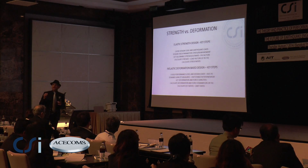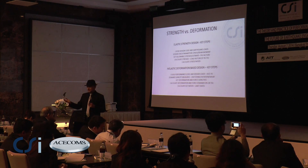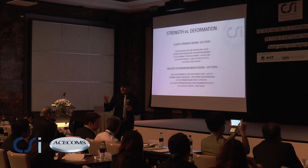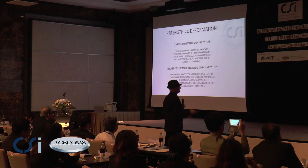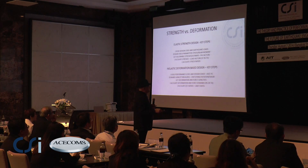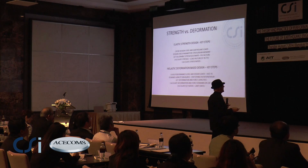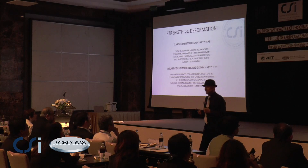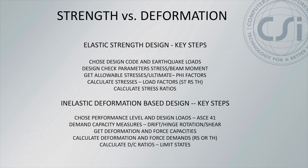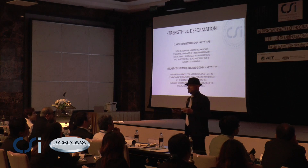For instance, if we are interested in doing a stress check of a steel structure by the codes that we currently use, we choose the design code and the earthquake loads. We then decide what parameters we're going to check, like maybe the combined stresses. If we have a concrete structure, we get the allowables with the fee factors. If you have a steel structure, we have the allowable stresses. We do an analysis, we calculate the stresses with load factors, and then we calculate a ratio between the actual stress and the allowable stress, and if that ratio is less than one, our structure is satisfied.